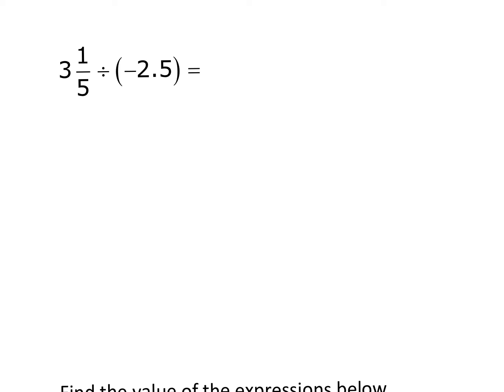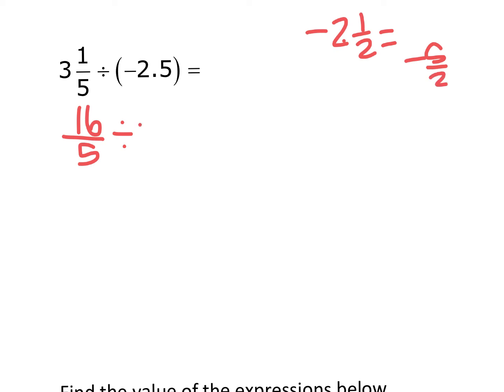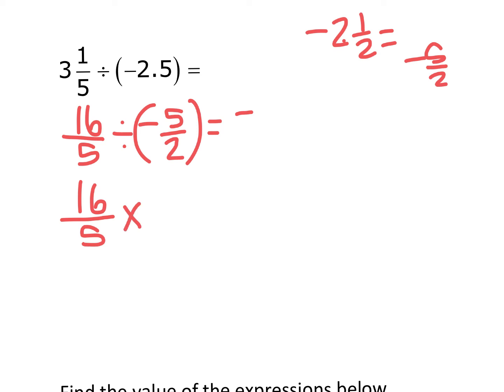In this next example we have three and one-fifth divided by negative 2.5. There are several ways to do this. Change three and one-fifth to an improper fraction: five times three is fifteen plus one, that's sixteen over five. Negative 2.5 is negative two and one-half, which as an improper fraction is negative five-halves. So we have sixteen-fifths divided by negative five-halves.